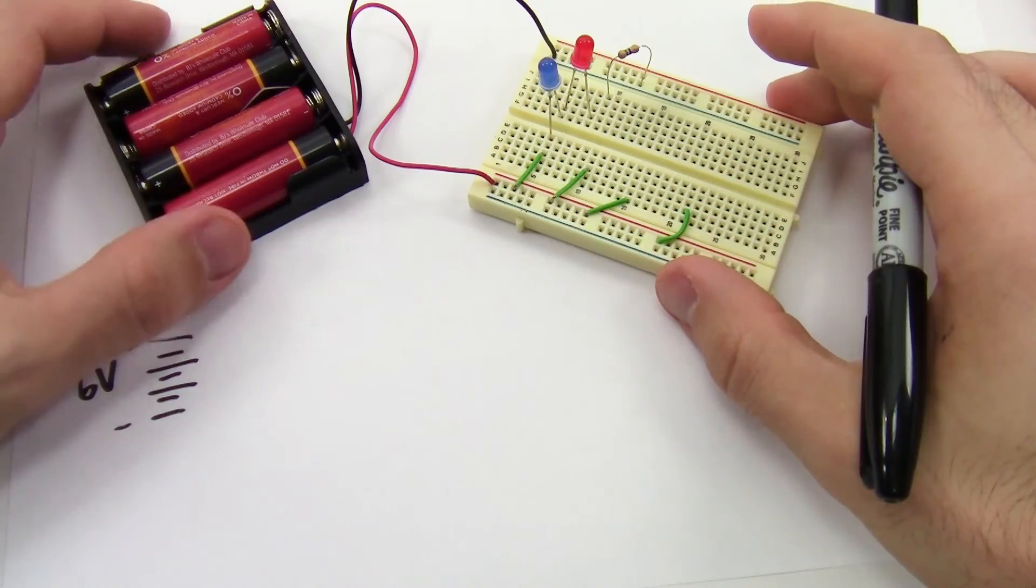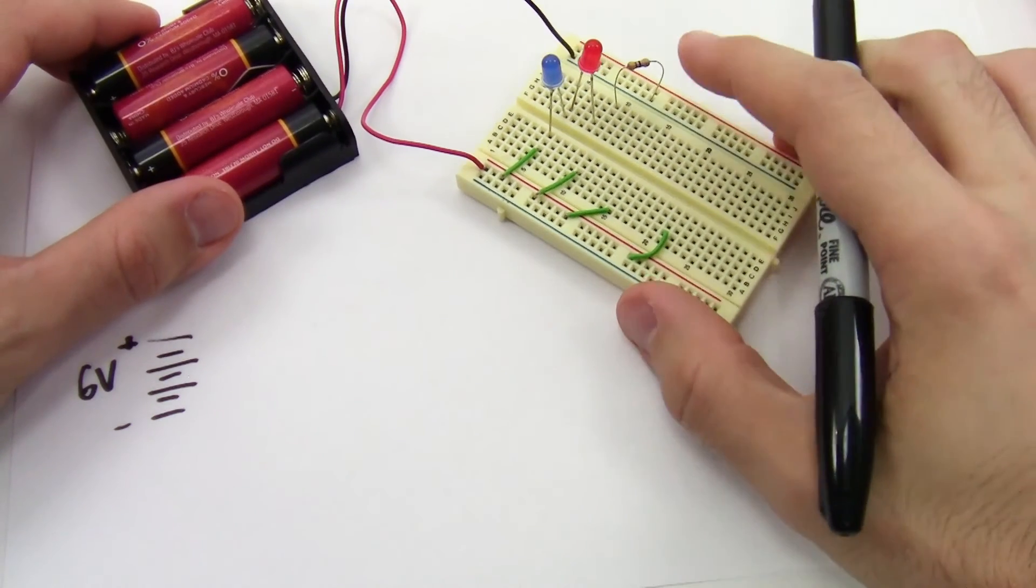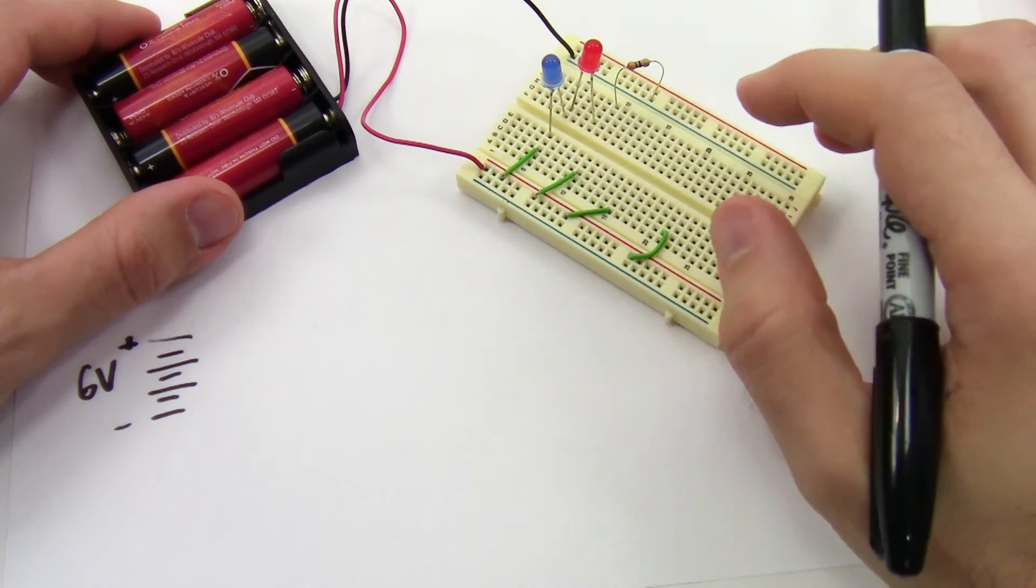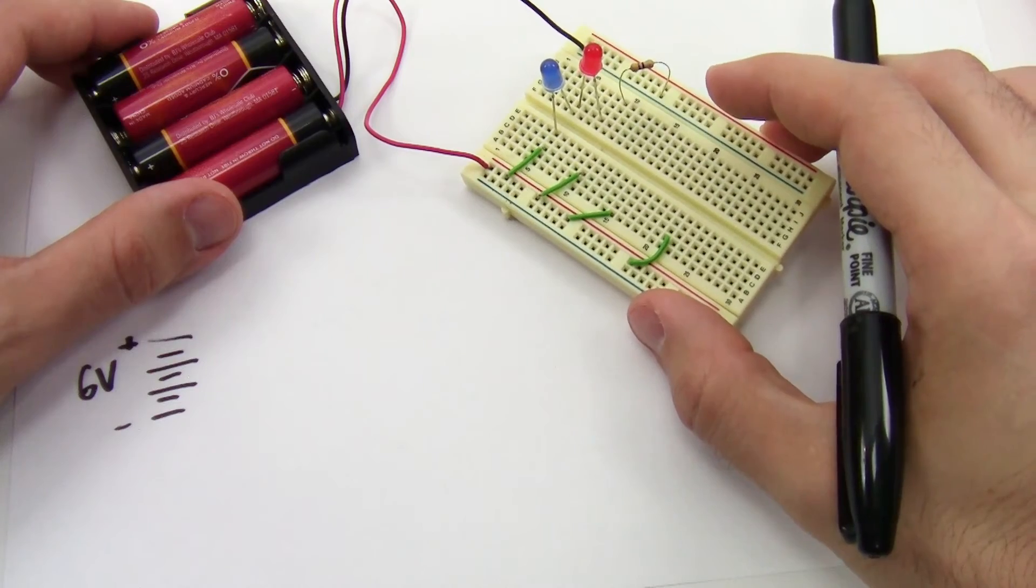Let's go over one more scenario. Say you already have a 4 by AA battery pack, and you don't want to have to buy another one, but you also don't want to burn off unnecessary power in your resistor by dropping more voltage than you need to. In this case, you can combine LEDs in series.